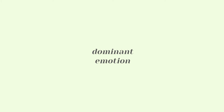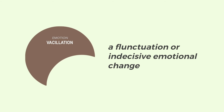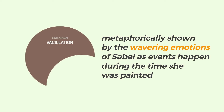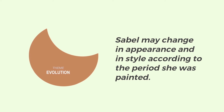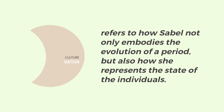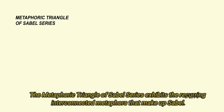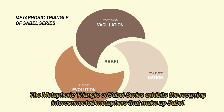The dominant emotion of the series is vacillation — a fluctuation or indecisive emotional change. Vacillation is metaphorically shown by the wavering emotions of SABEL as events happened during the time she was painted. Another metaphor exhibited by SABEL is evolution, which depicts the transformation of SABEL from one form to another. SABEL may change in appearance and in style according to the period she was painted. SABEL is also seen as a socio-historical reflection of the nation, referring to how SABEL not only embodies the evolution of a period but also how she represents the state of the individual.